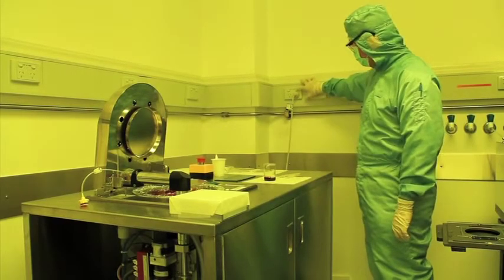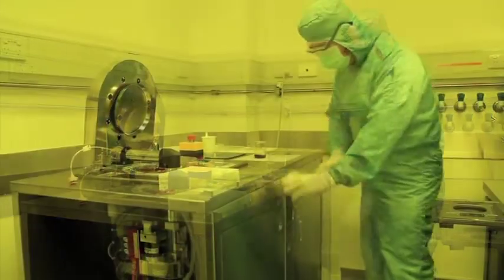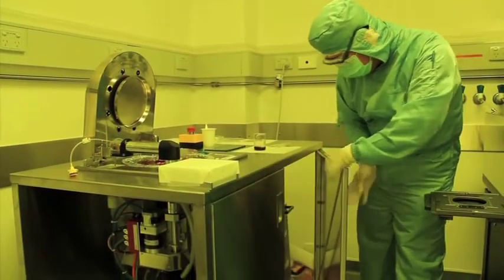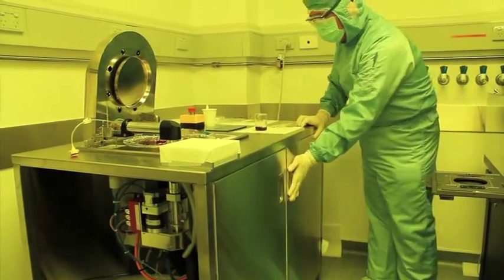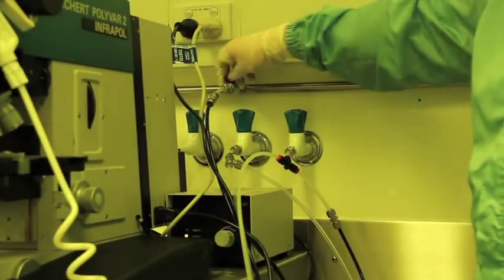To turn the machine on, there are two switches, one on the wall and one on the spinner itself. Before operating the spinner, open the air and nitrogen taps. The nitrogen is only used to clean the wafer.